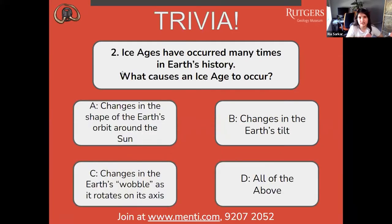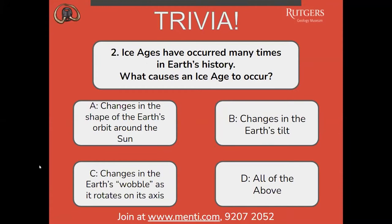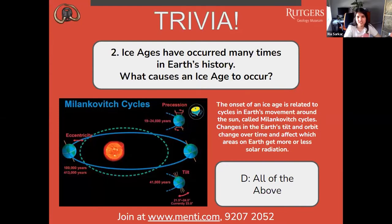Next question: ice sheets have occurred many times in Earth's history. What causes an ice age to occur? Is it A, changes in the shape of the Earth's orbit around the sun? B, changes in the Earth's tilt? C, changes in the Earth's wobble as it rotates on its axis? Or D, all of the above? The correct answer is D, all of the above. The onset of an ice age is related to cycles in Earth's movement around the sun, called Milankovitch cycles. Changes in the Earth's tilt and orbit change over time and affect which areas on Earth get more or less solar radiation.